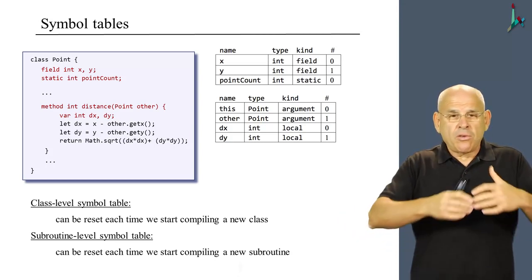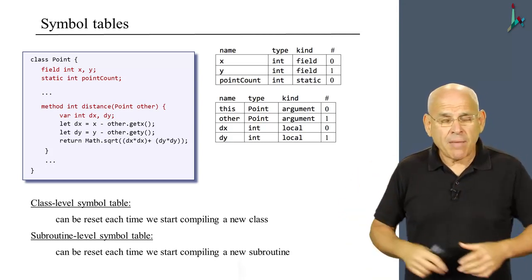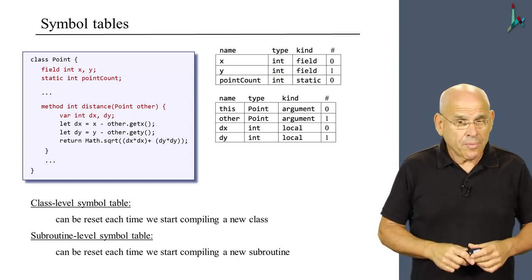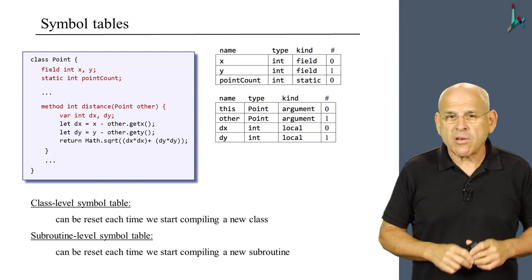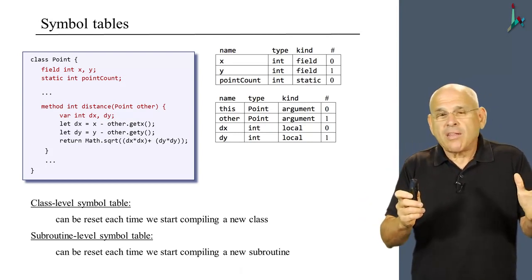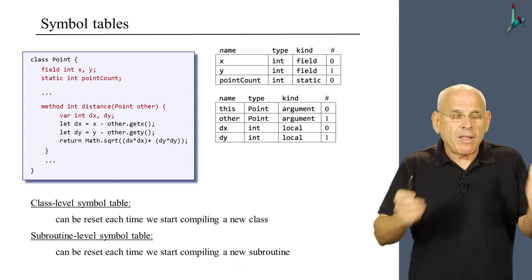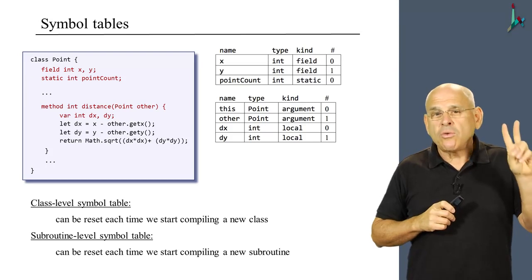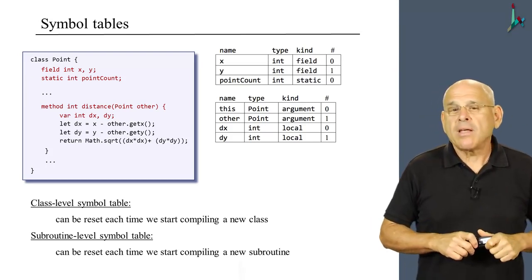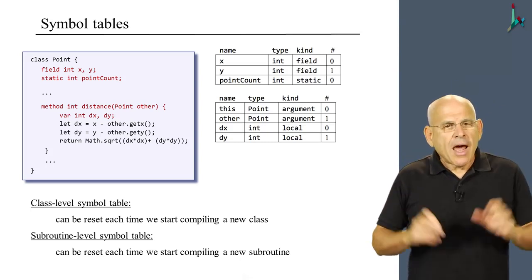I told you in the previous unit that in Jack, as well as in Java and in C sharp, classes are standalone compilation units. So whenever you complete to compile a class, you can throw away the symbol table of that class. And when you start compiling a new class, you can start fresh from a new class level symbol table. Something similar happens when you compile subroutines.